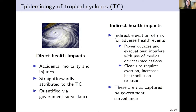Tropical cyclone formation is influenced by climate because very specific climate conditions are needed for their formation, and their patterns are expected to be impacted by climate change, although there is still some debate about exactly how. From the epidemiology side, TCs are some of the most dangerous natural disasters for human health. We typically categorize their health impacts into direct and indirect: direct impacts include injuries and accident-related mortalities caused by the tropical cyclone, such as being injured by a falling tree or drowned in floodwaters.